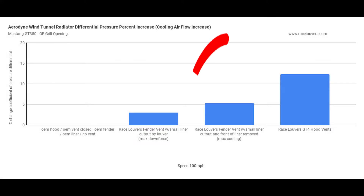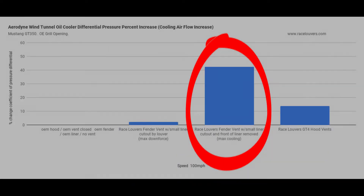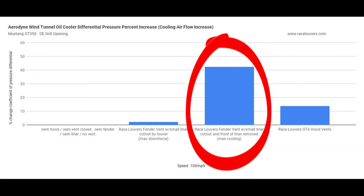For maximum cooling, we remove the front part of the liner, and as you can see we get a small gain in radiator cooling, but we get a significant gain in the oil cooler cooling. I should note that the oil cooler is in the front corners of the car and it feeds into the fender wells.